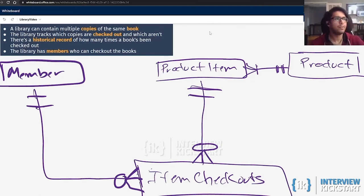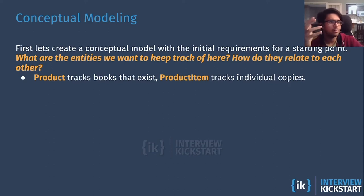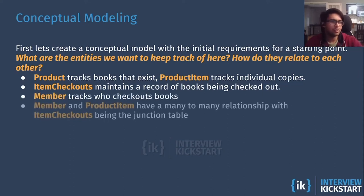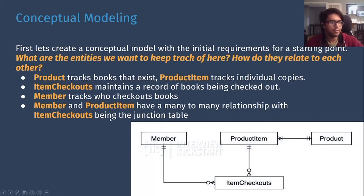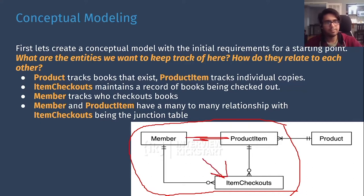Stepping back and reviewing: this is basically our initial conceptual model. We've created our entities from our initial requirements. We have products — which tracks books, magazines, or what have you that exist. Product item tracks individual copies. Item checkouts contains a record of the books being checked out. Members are the ones who check out books. And member and product item have a many-to-many relationship with item checkouts being the junction table. That satisfies our requirement of having at least one many-to-many relationship.